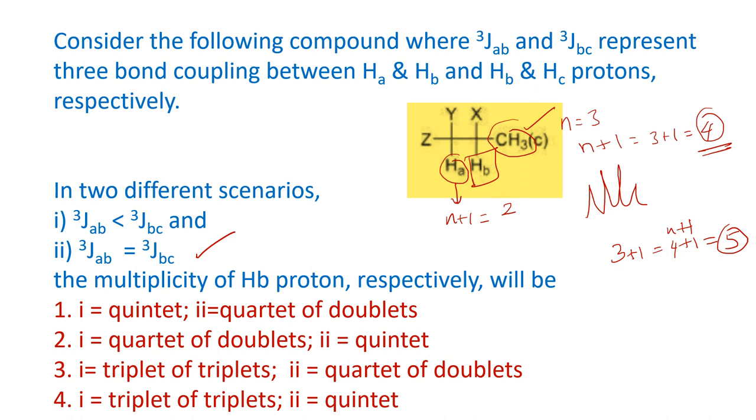In the given options that we have here, the second case quintet is only for option number 2 and option number 4. Then when we see the first case, we see that option number 4 talks about a triplet of triplets. There is no possibility of a triplet in the first case at all. So option 4 is not the correct option. Second option only is the correct option wherein you have a quartet of doublets. This is how we solve the problem.